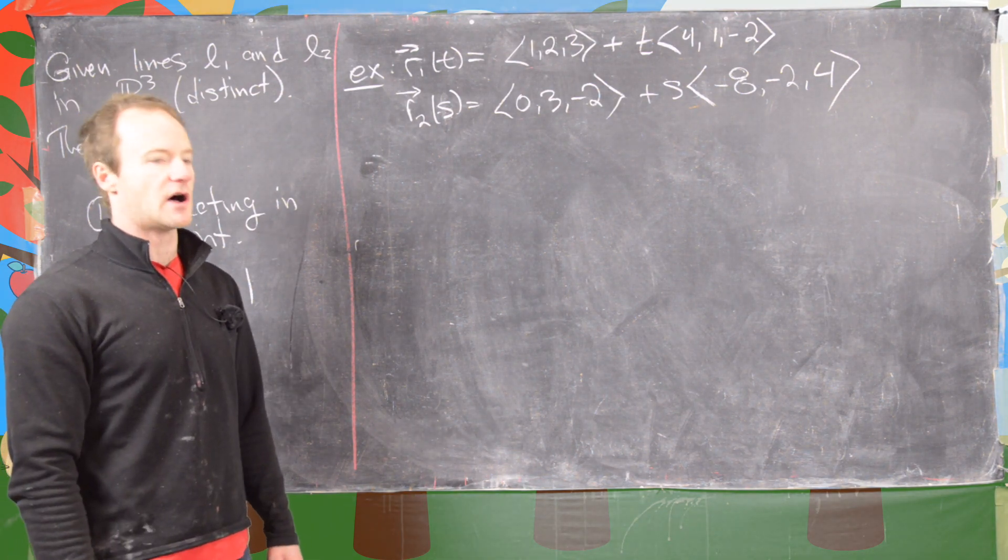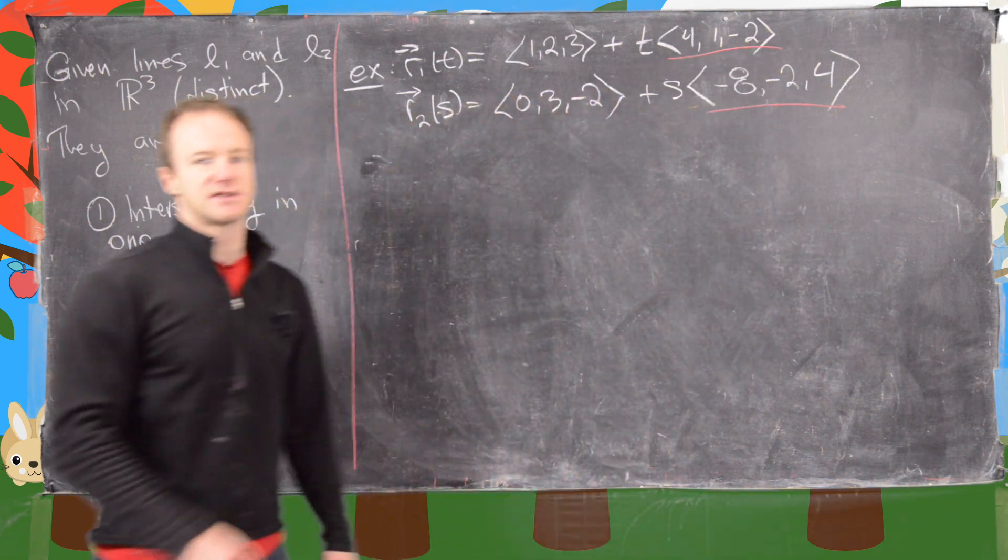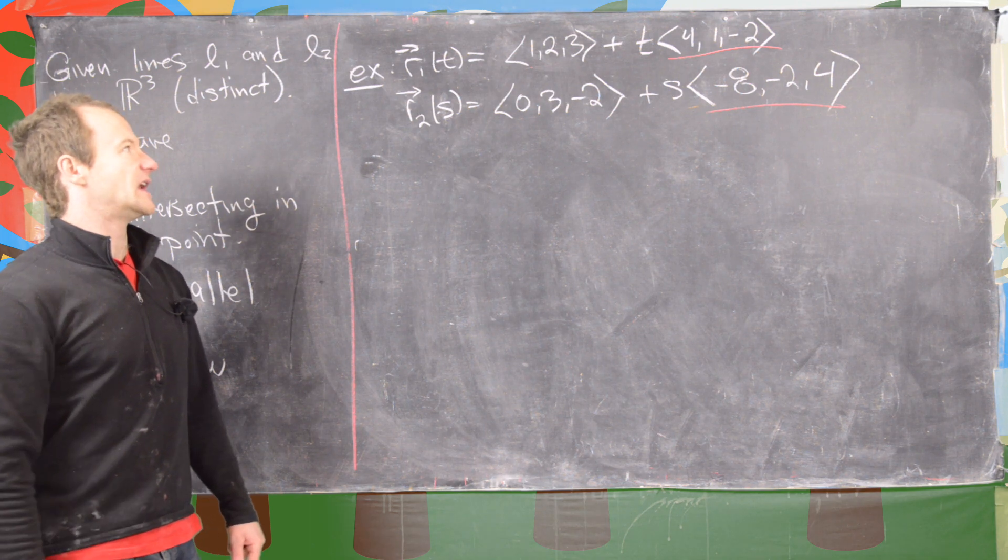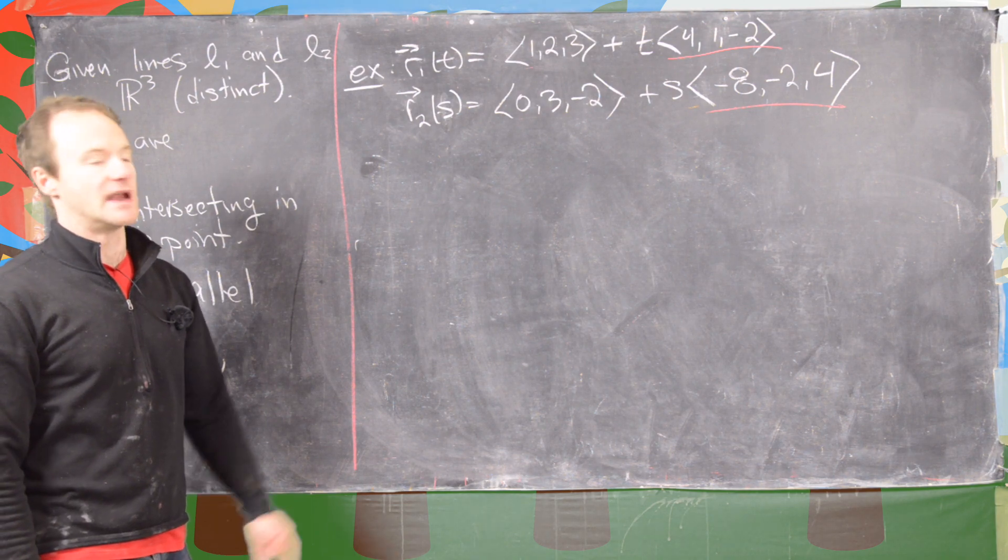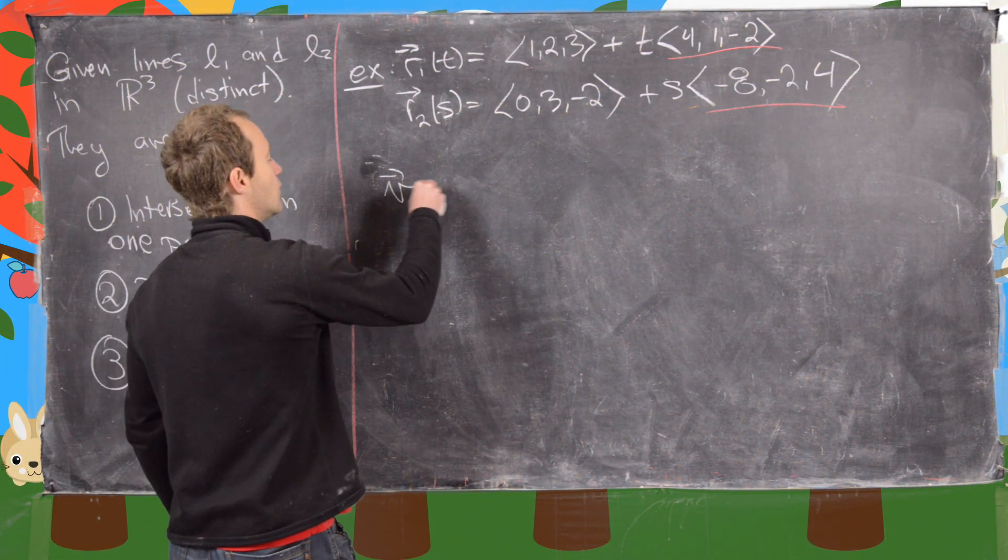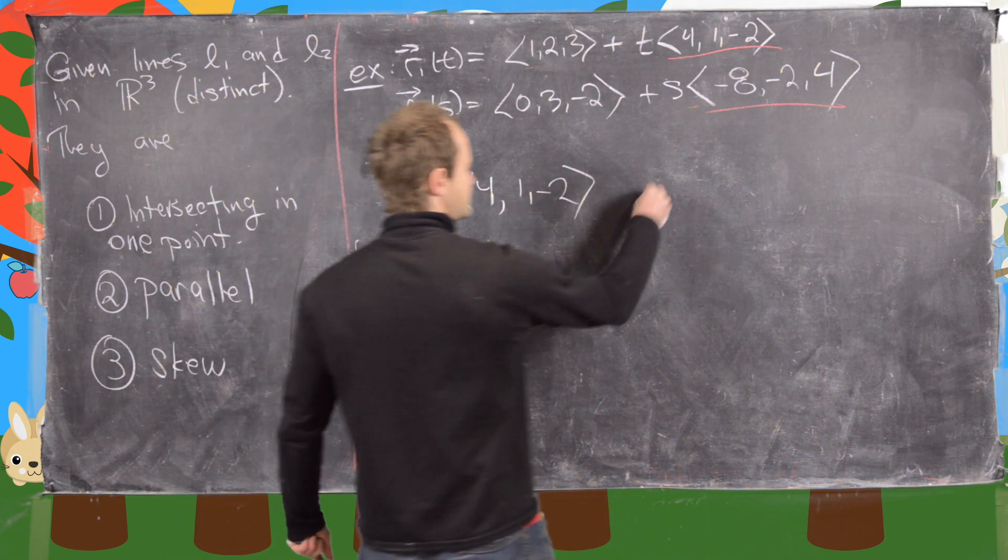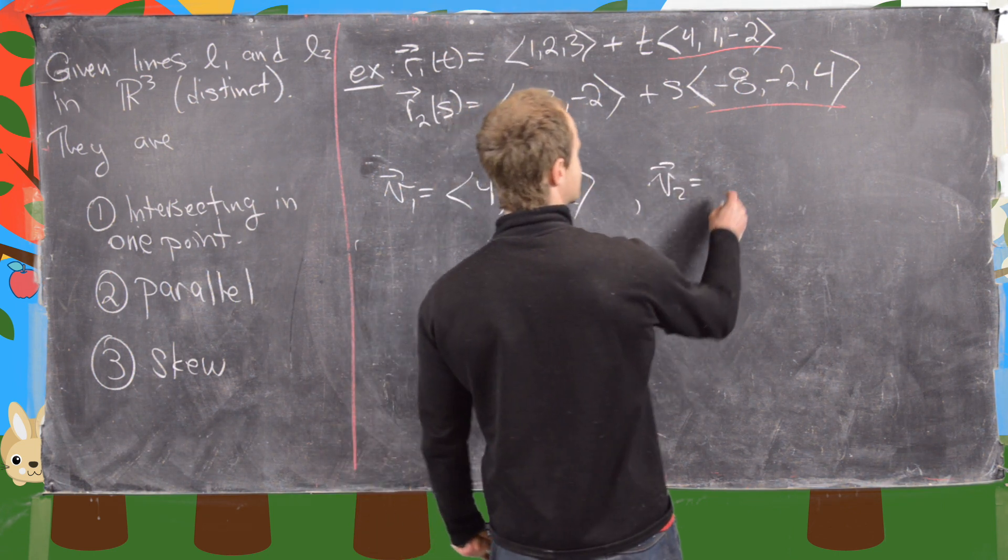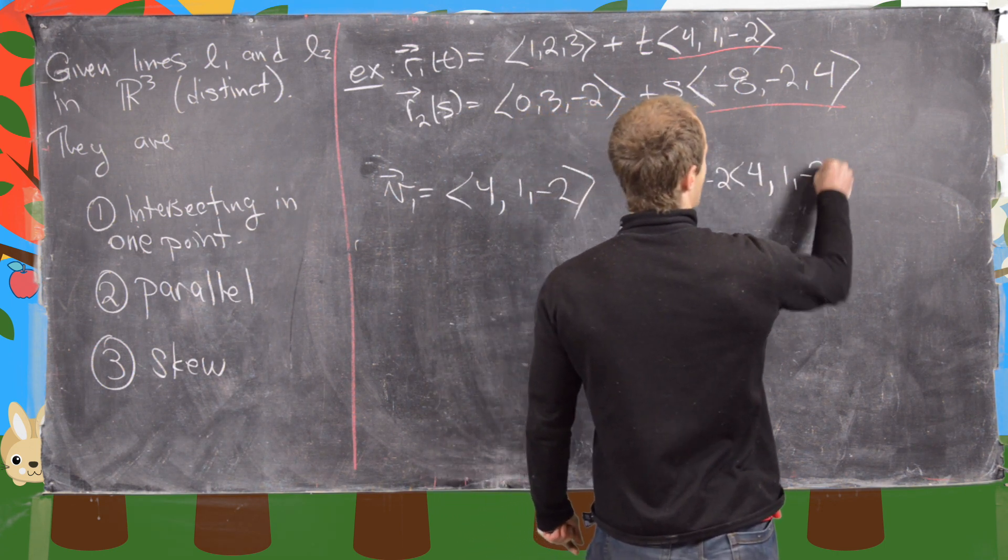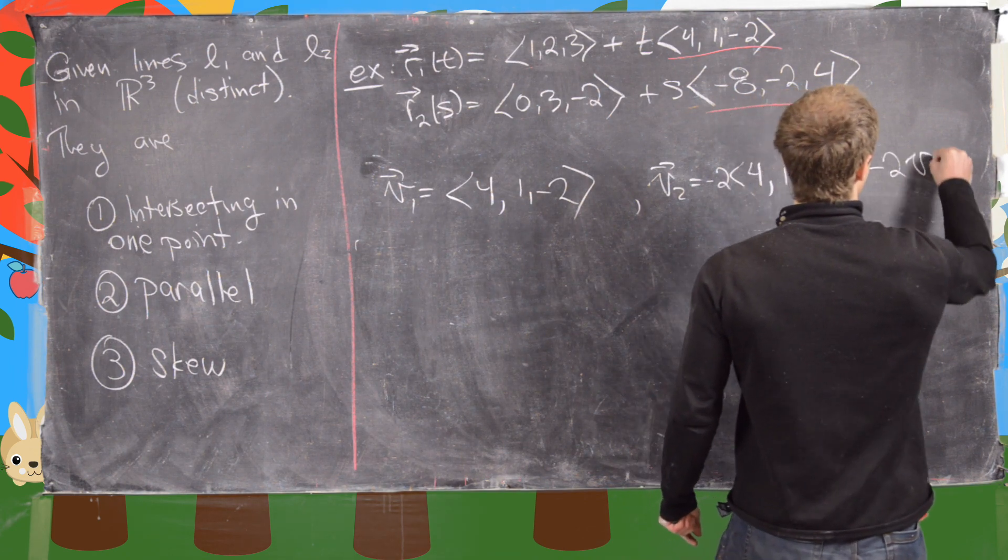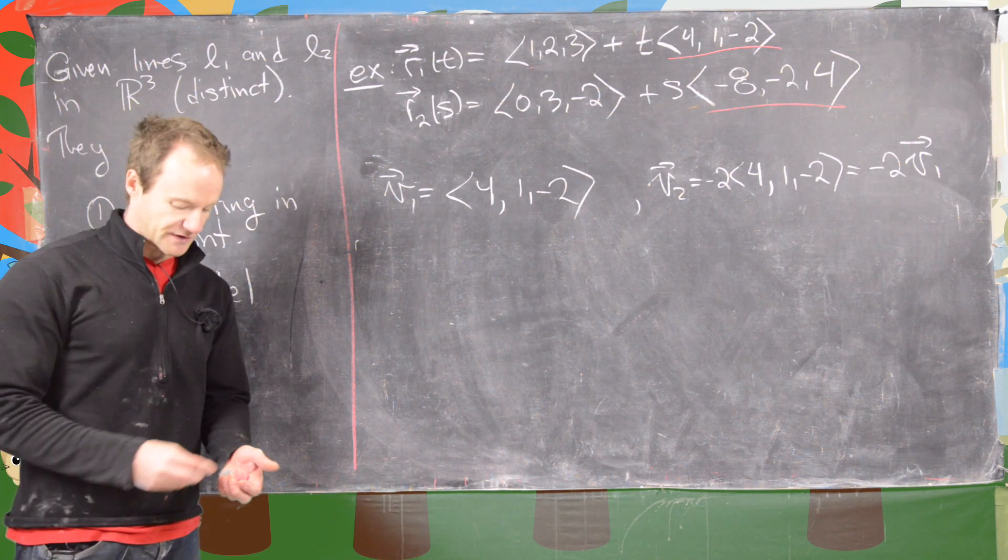Before we set up equations and try to solve them, we should look at the vector defining each of these lines. Notice that the vector defining the first line is a multiple of the vector defining the second line. If we set V1 to be (4, 1, -2), then V2 equals negative 2 times (4, 1, -2), which equals -2 V1.